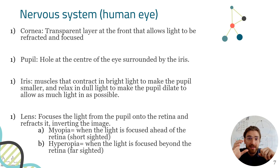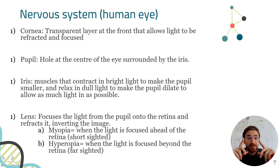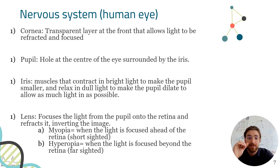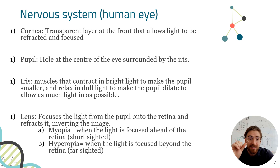The iris is the muscle that will contract when there is a lot of light. The rod receptor cells in the back of the eye tell us how much light we're getting — if we're getting too much, the iris is going to constrict. If we're not getting enough light, it is going to dilate and get bigger. So the pupil size is controlled by the iris.